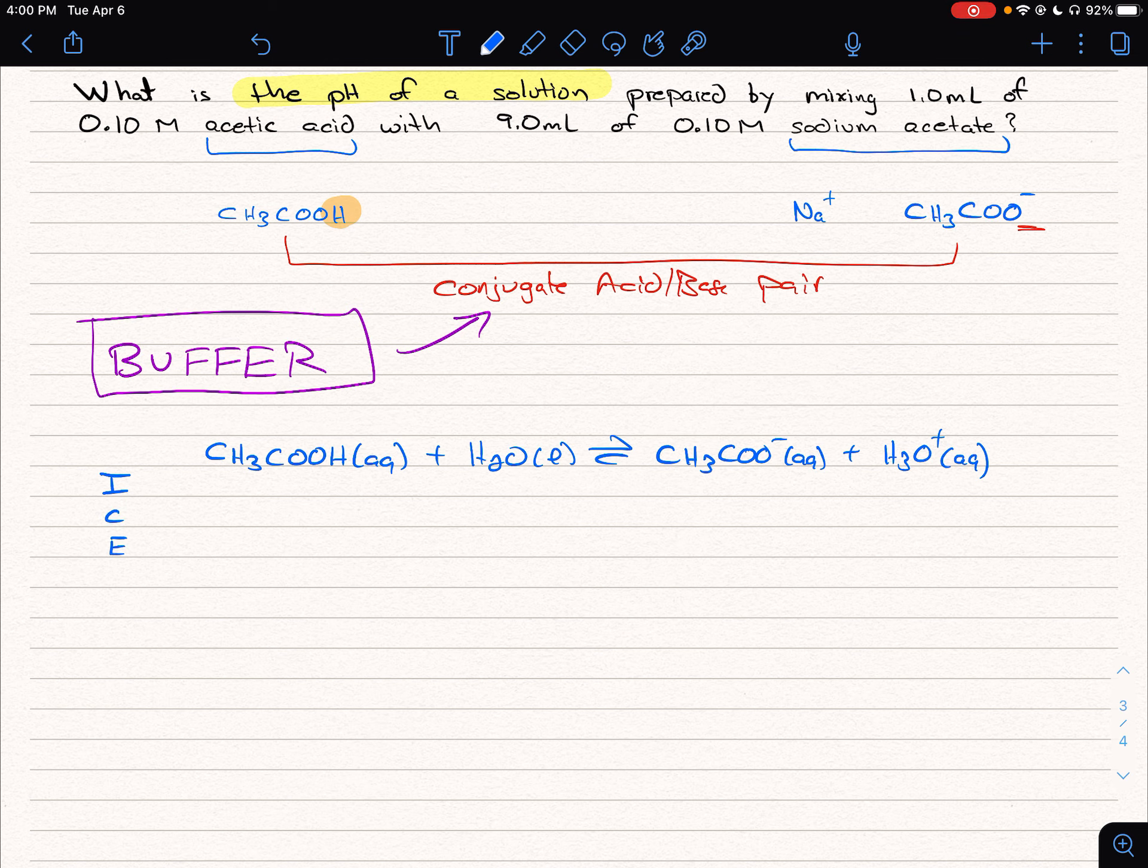In this case, before we can get to the ICE table, we're going to have to figure out what our concentrations are. We're going to have to do a little bit of conversions here, because we're told we're mixing 9 mL of a 0.1 solution of sodium acetate with 1 mL of a 0.1 molar solution of acetic acid. So we're going to have to figure out what the concentration of each of those is after those two volumes have been mixed.